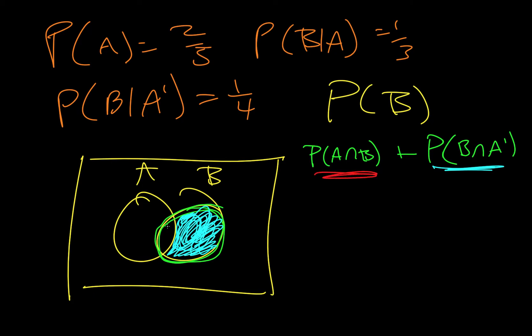And then the intersection of A and B is this football section right here. And then if we add those together we get P of B. So to find this we're actually going to go back to what we learned on the previous video and we're going to use conditional probability.